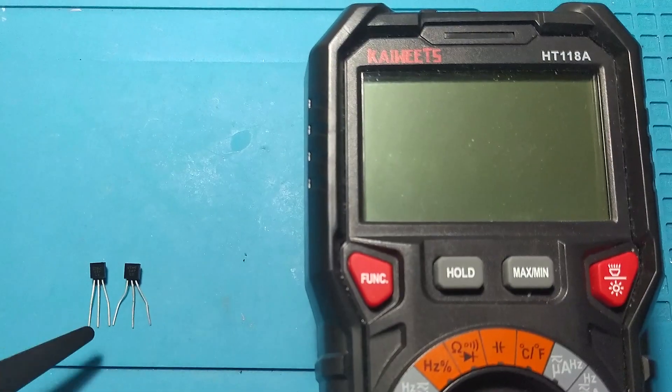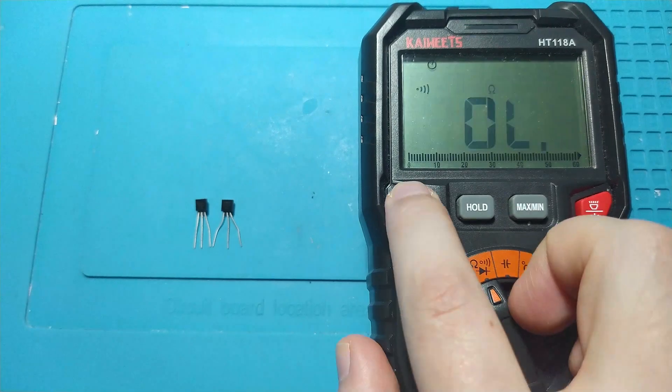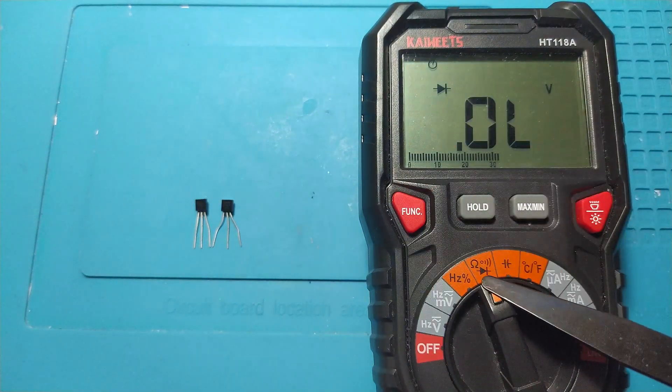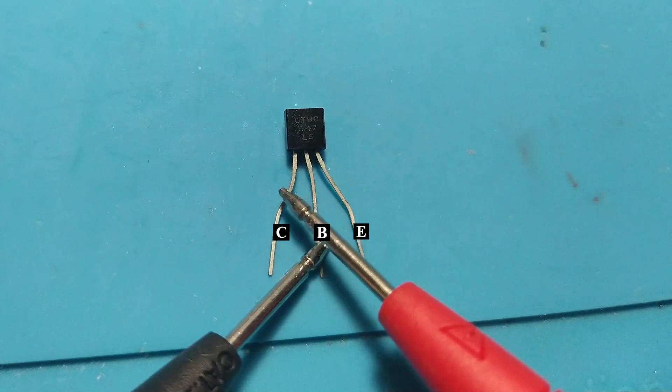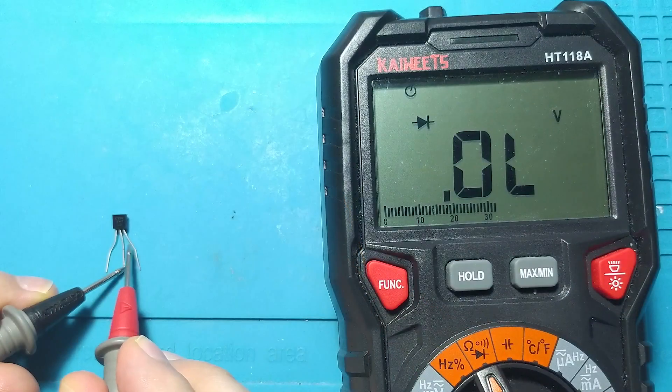To test the transistors, select the multimeter on the diode measurement area. With the black probe on the base and the red probe on the emitter or collector must not have any voltage drop.